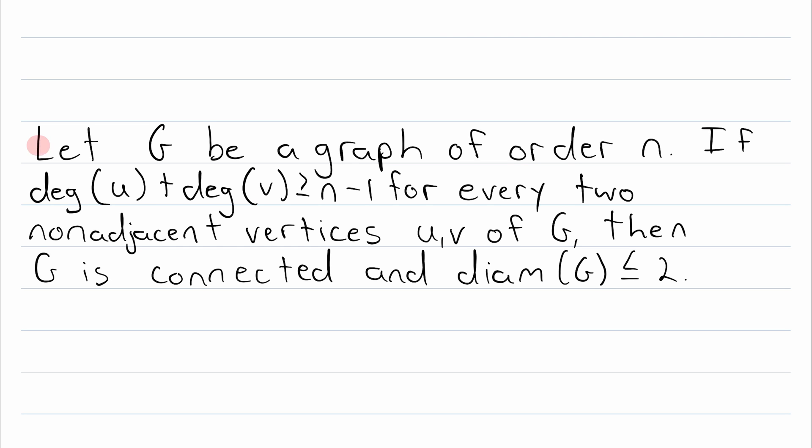Here is the theorem. Let G be a graph of order n. If the sum of the degrees of every two non-adjacent vertices is greater than or equal to n minus 1, then the graph G is connected and it has a diameter less than or equal to 2. Remember that the diameter of a graph is the greatest distance between any two vertices.